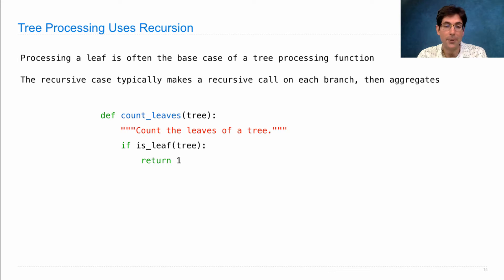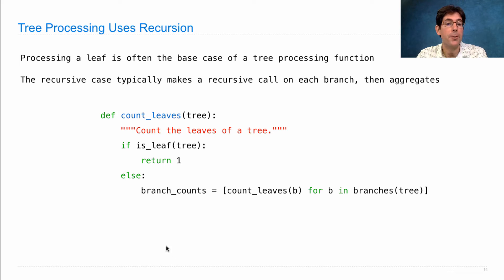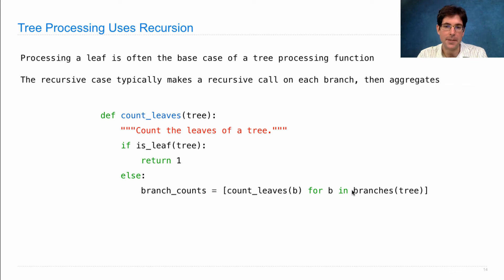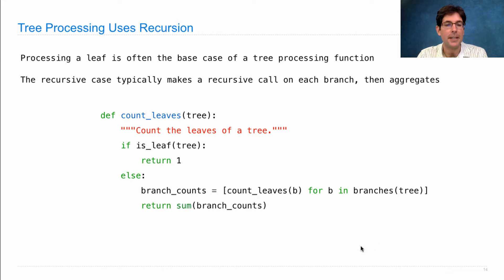The recursive case in the count_leaves example is very typical of tree processing functions in general. You often make a recursive call on each branch, then do some aggregation, such as summing up the results or putting them together into the branches of a new tree. In this case, we first compute the branch counts — the leaves in each branch — by calling count_leaves(b) for every b in branches(tree). Once we have the counts of all the leaves in each branch, we sum those up to get the count of the leaves in the whole tree.